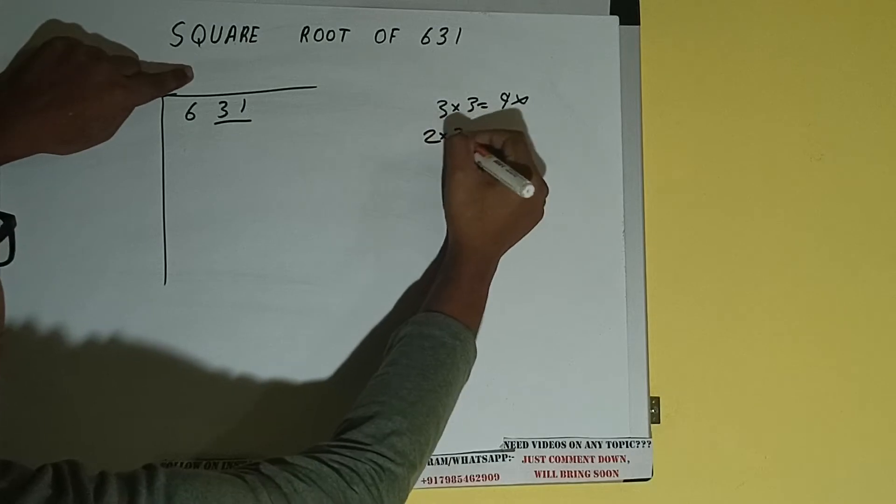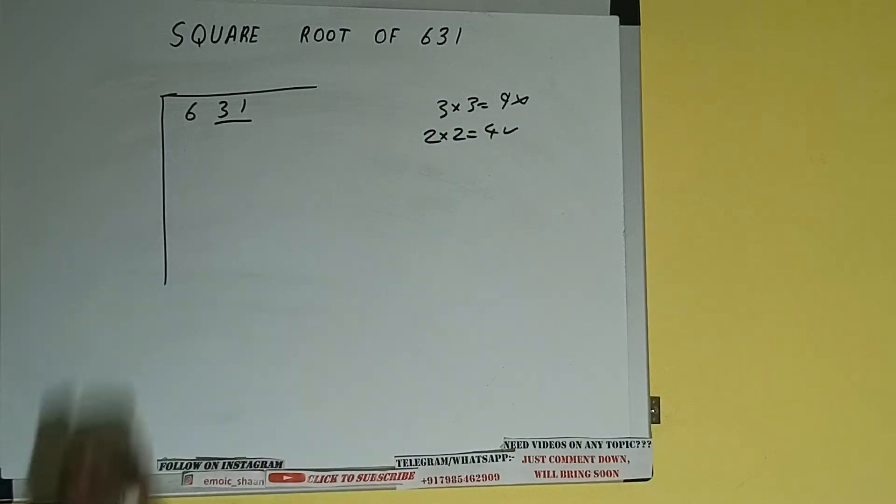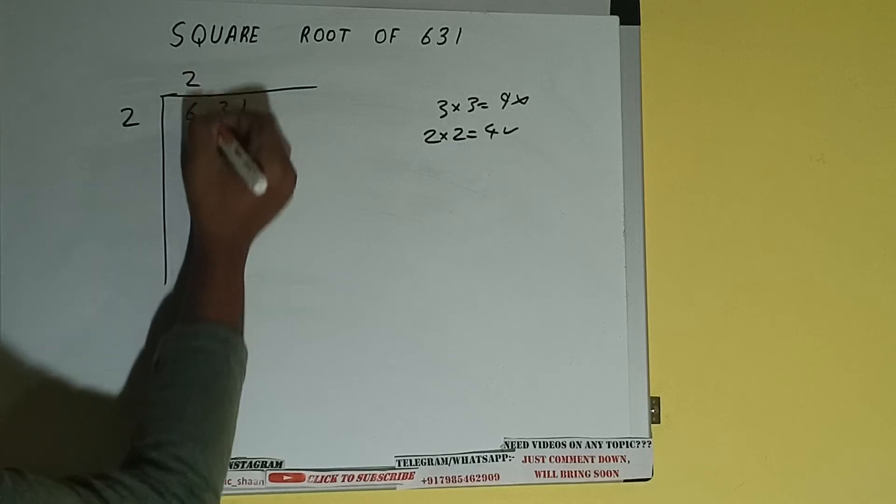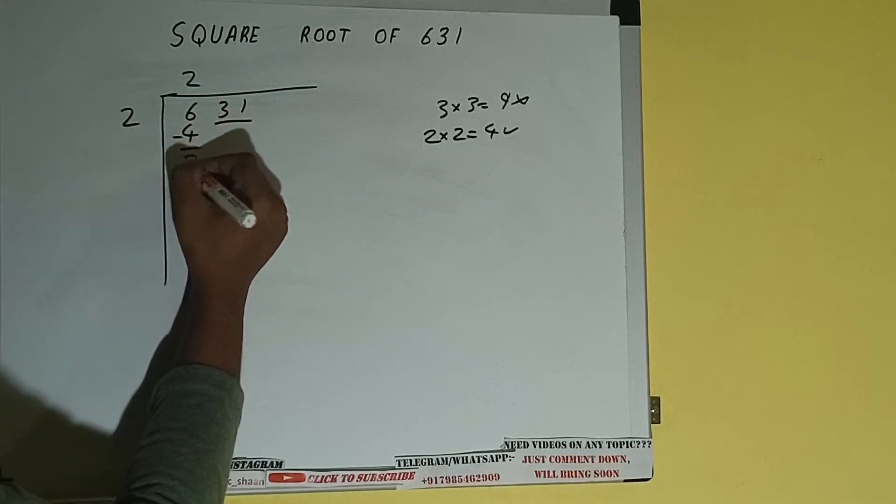If we write 2 here and 2 here it will be 4 which is good to take. So 2 here and 2 here, 4 subtract, 2 will be left.